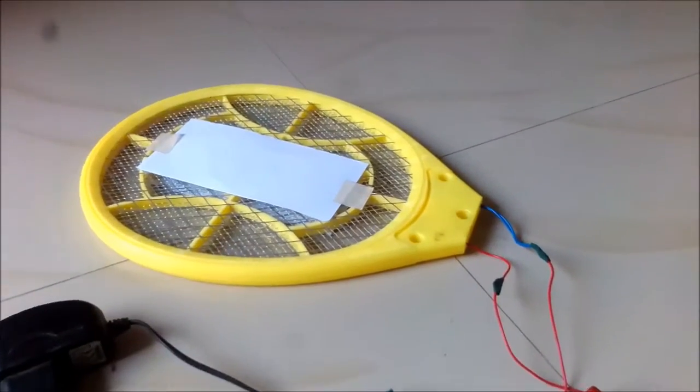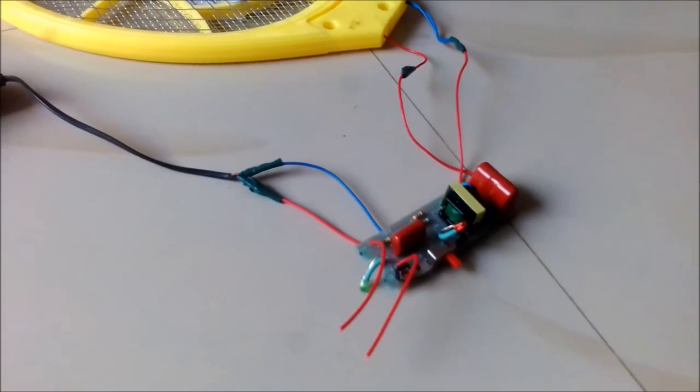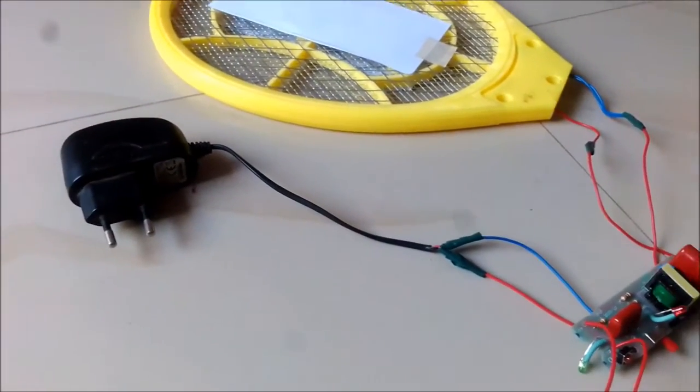Pripojte výfukový ventilátor k preglejke pomocou oceľových pásov. Otvorte batériu Mosquito a vyberte batériu.